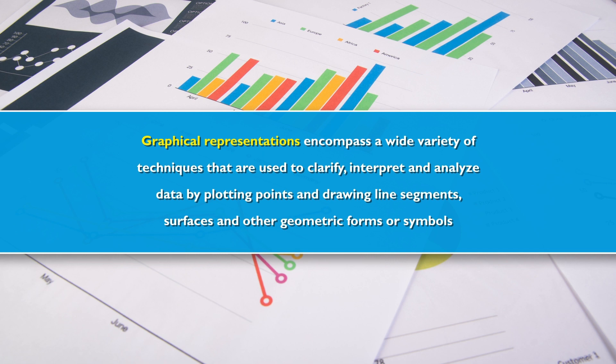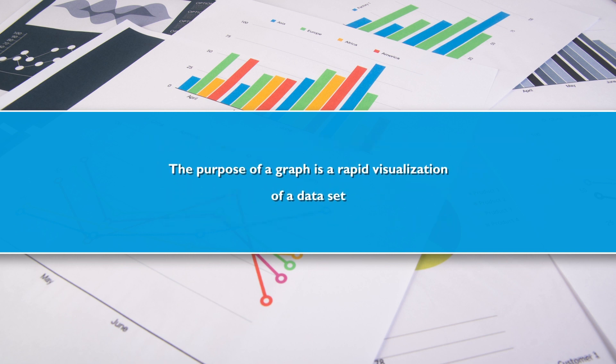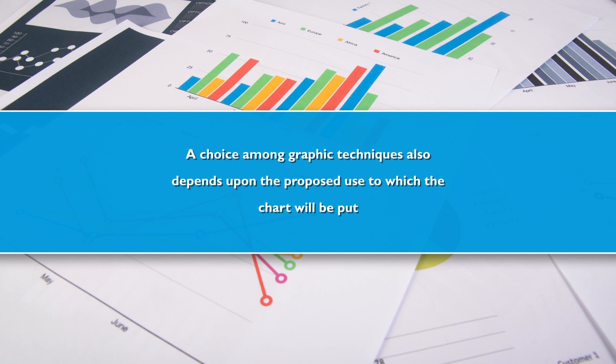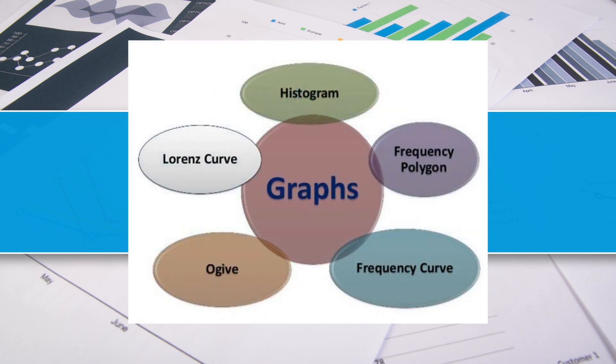The purpose of a graph is rapid visualization of data. A choice among graphic techniques also depends on the proposed use of the chart. The graphical presentations covered in the present scenario include Lorenz curve, histogram, frequency polygon, frequency curve, and ogive. These come under the ambit of graphs of time series, because time series is the set of values of a variable arranged over a period of time.